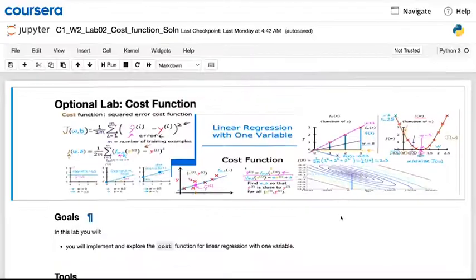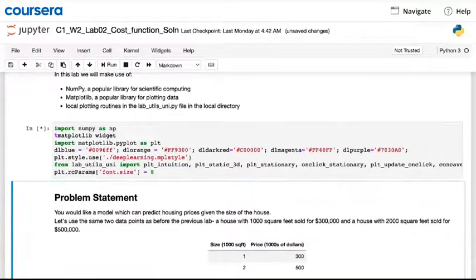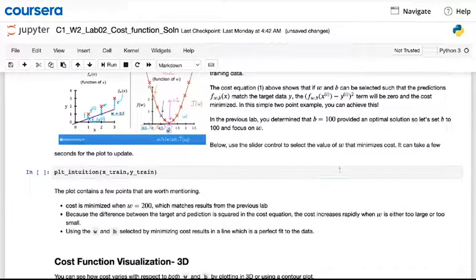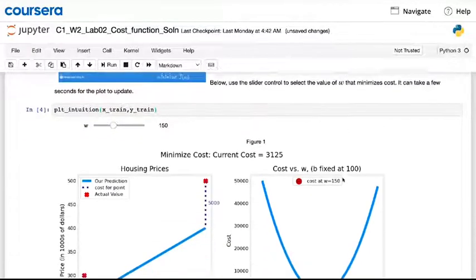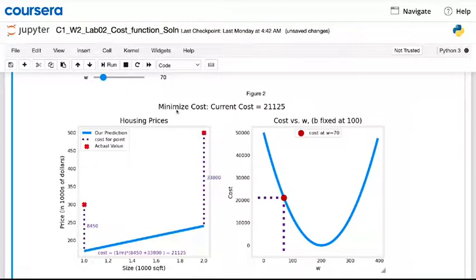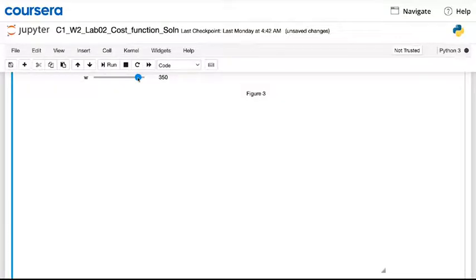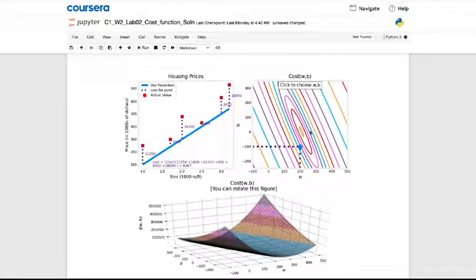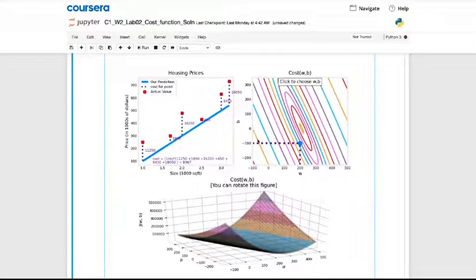In the optional lab that follows this video, you get to run some code. And remember, all of the code is given, so you just need to hit shift enter to run it and take a look at it. And the lab will show you how the cost function is implemented in code. And given a small training set and different choices for the parameters, you'll be able to see how the cost varies depending on how well the model fits the data.